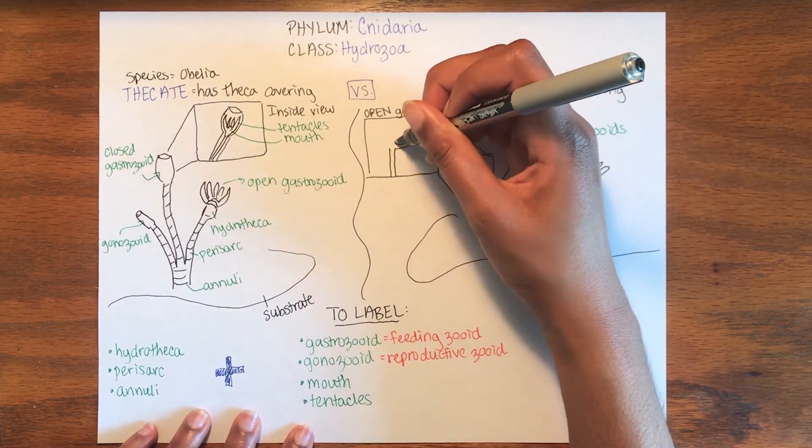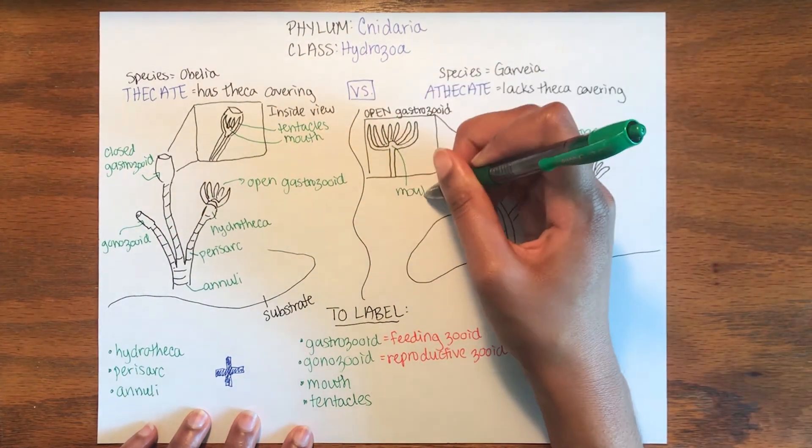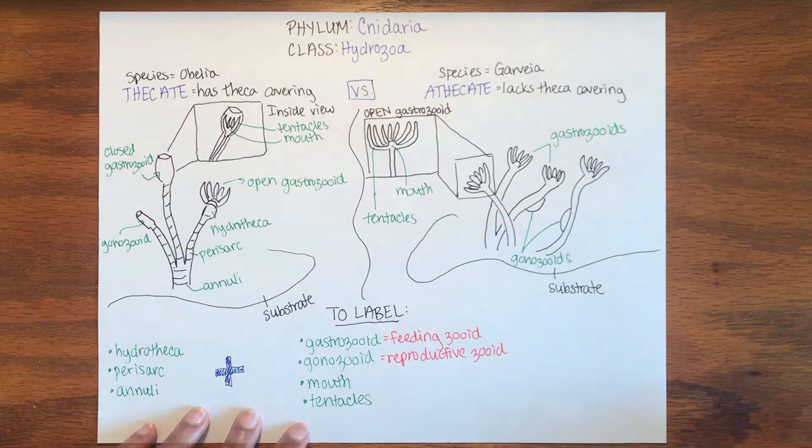You can imagine a close-up of an open gastrozoid with the tentacles outstretched around the mouth to catch food particles.